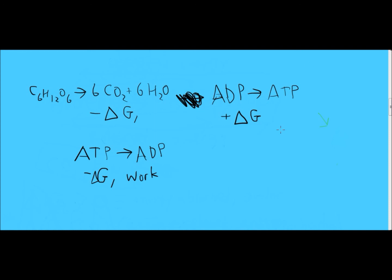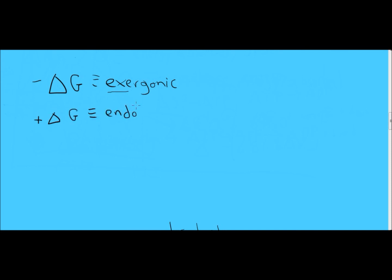If you've got delta G, a change in the free energy that's negative, so negative delta G, energy is released. And so we call that an exergonic reaction. Exergonic means a release of energy. The energy goes outside of the system. It's exergonic. And so if we have a positive delta G, you can probably guess, energy goes into the system. It is endergonic.